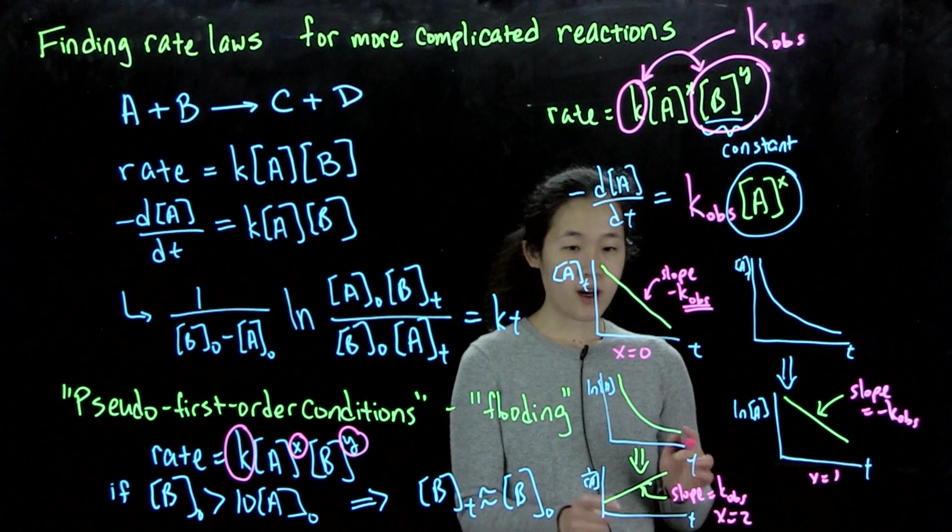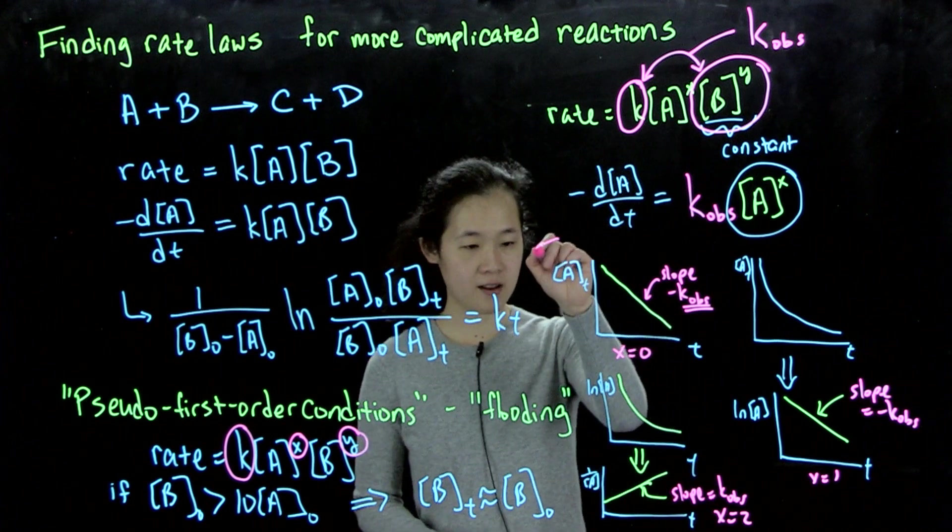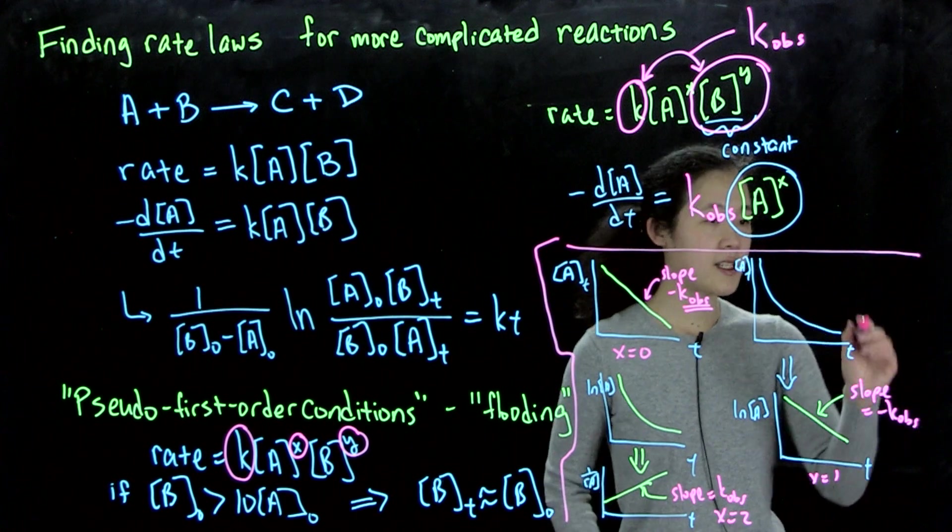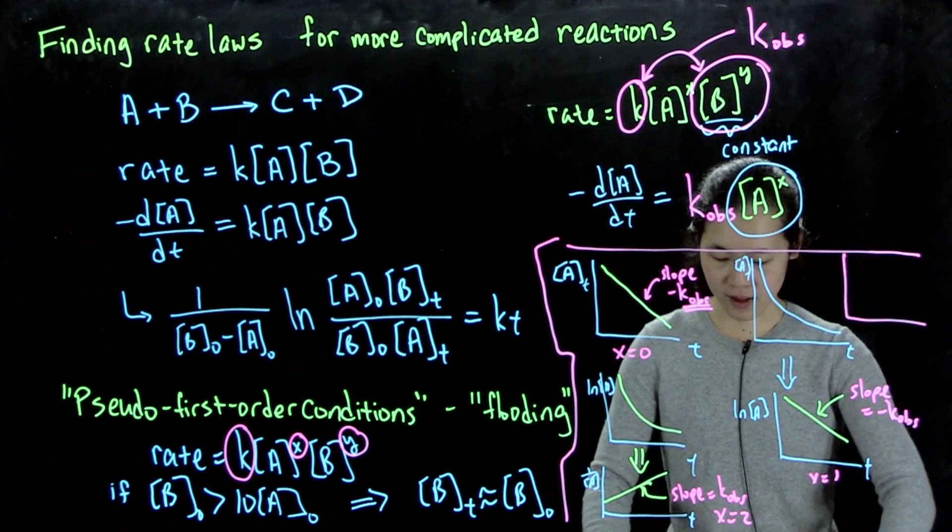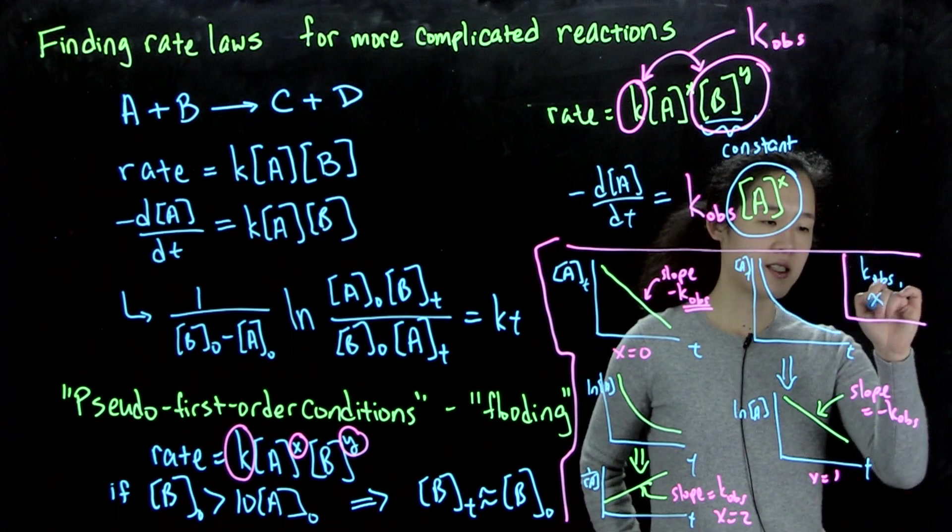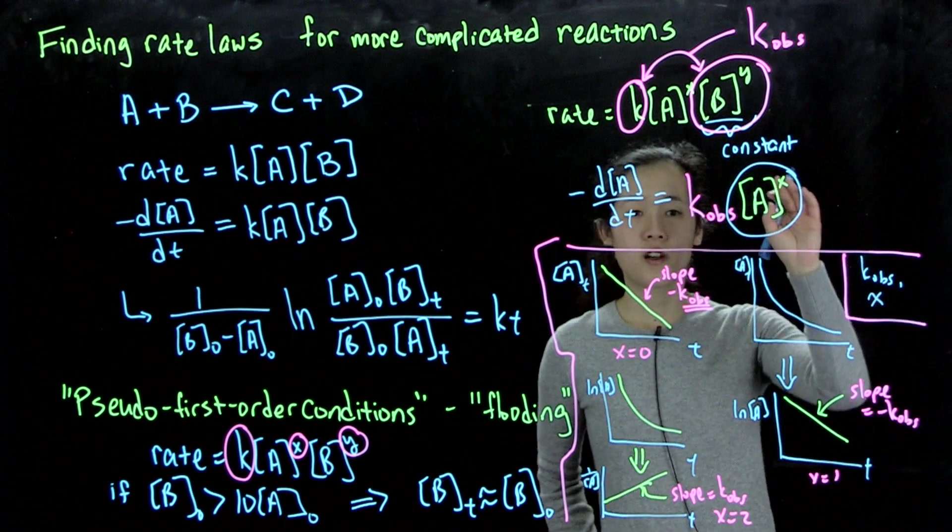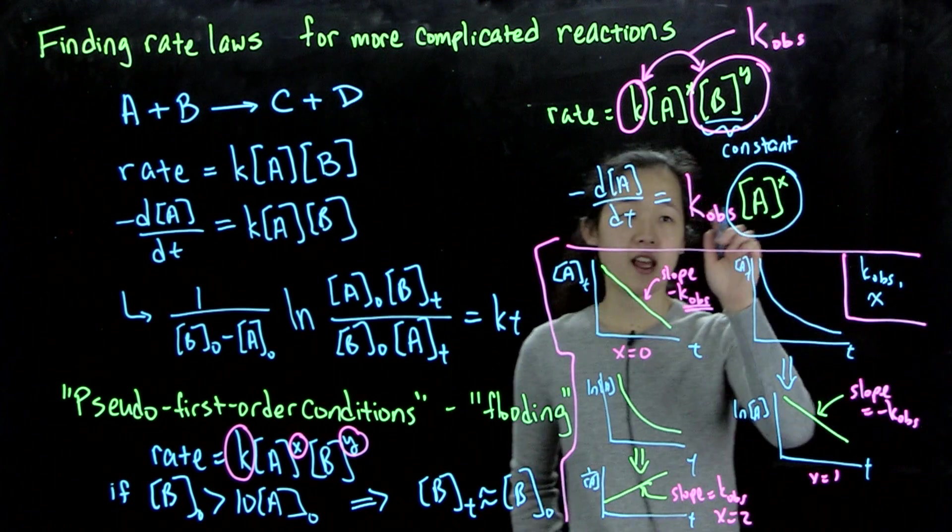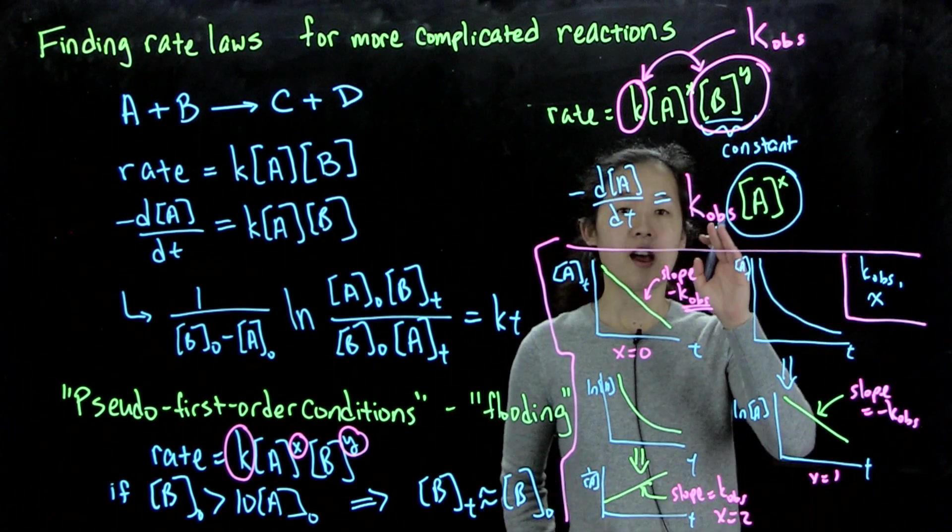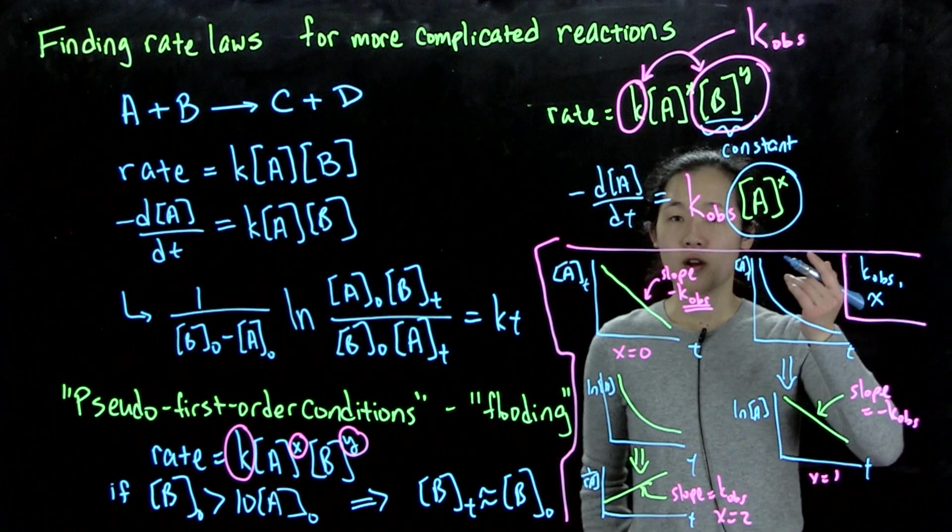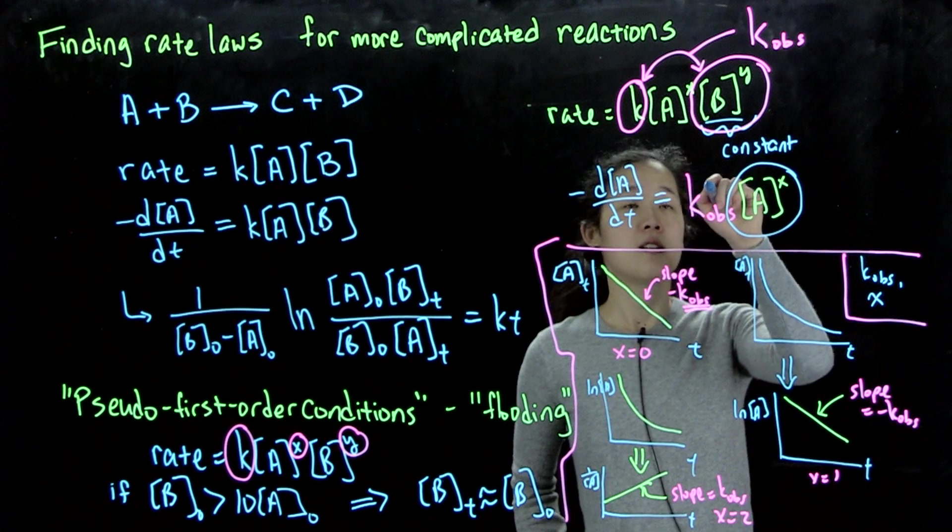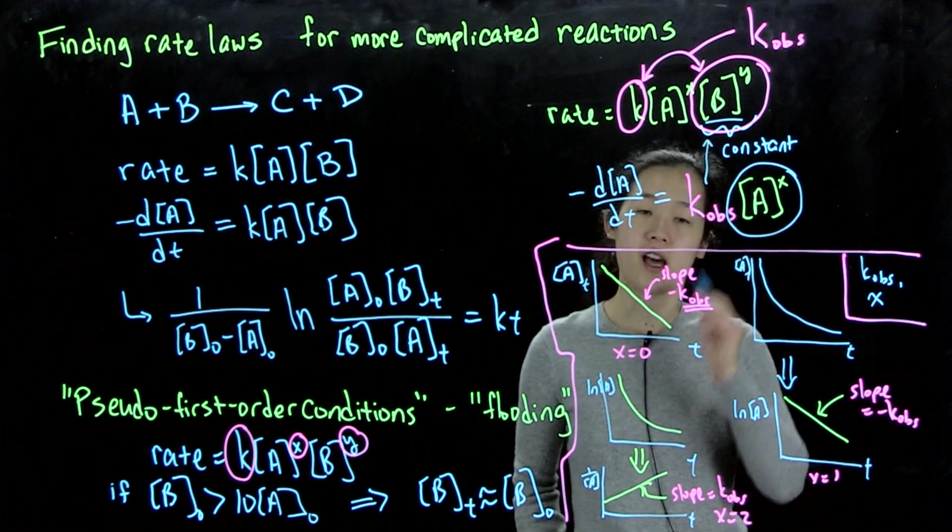So with all of this process, this little rectangle, this gives us, importantly, this gives us k_obs and this gives us x. So now we know the order in A, and we have the observed rate constant. And then from there, the second step, which we'll talk about in the next video, will be how to go from k_obs to y and the actual rate constant.